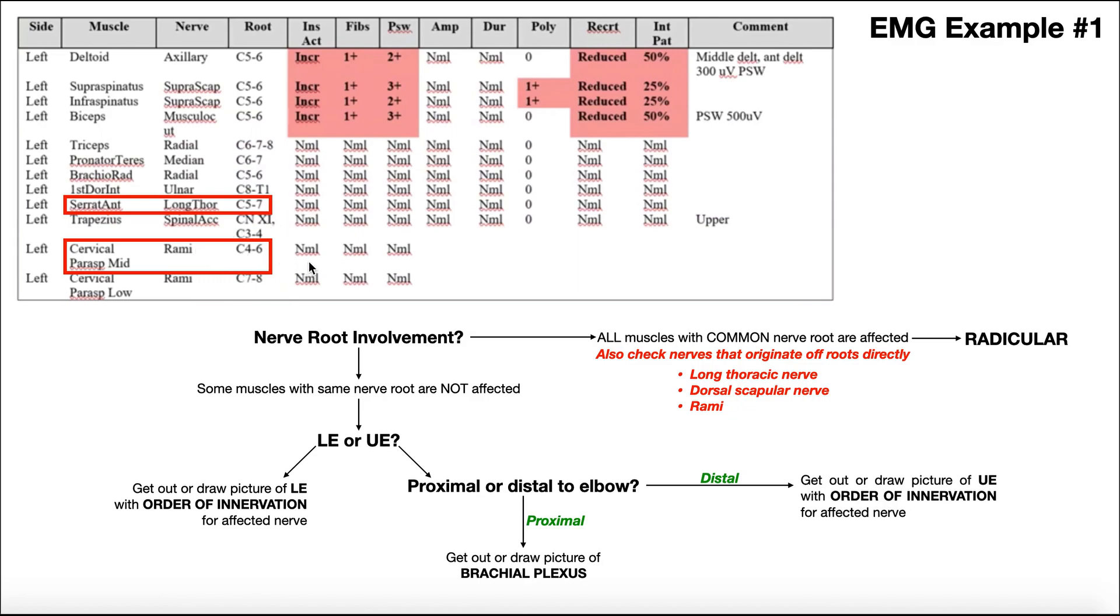If these rami and long thoracic nerve and even dorsal scapular nerve were abnormal, that would strongly rule up a radiculopathy. So given that these are normal, I have now ruled out a radiculopathy.